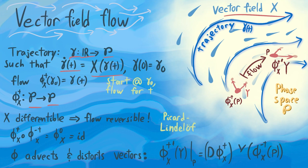And this has some nice properties. For instance, if x, our vector field, is differentiable, then we know the flow is reversible. Essentially this is because of Picard-Lindelöf, which you might have encountered before. This is a theorem on ODEs which says a first-order ODE always has a unique solution. And this right here is a first-order ODE. So it says that flowing by time t, I will always get to a unique place, which means that none of my points will actually collide with each other as they flow along.